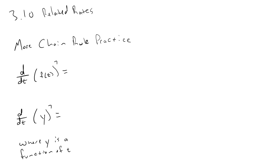In section 3.10 of our book, we're going to learn some applications of the chain rule and implicit differentiation called related rates. You'll see several examples of what that means in the next few videos. Before those, I want to start with some background information that will make those videos a little more clear.